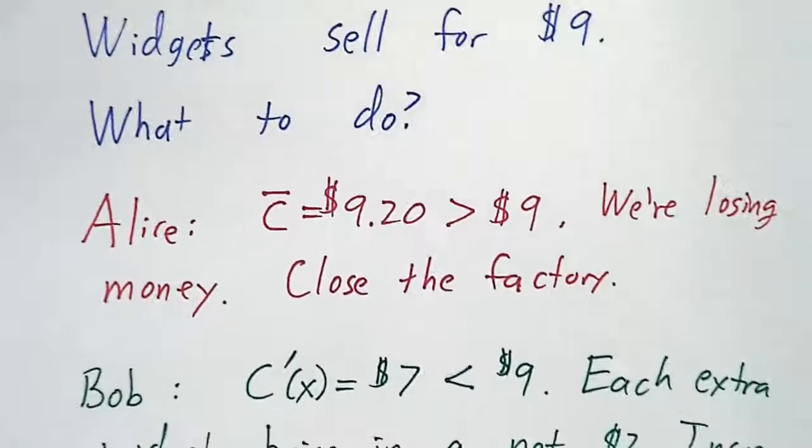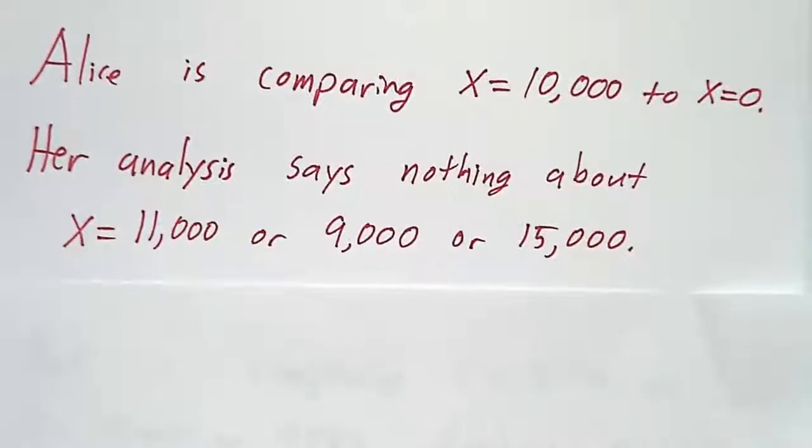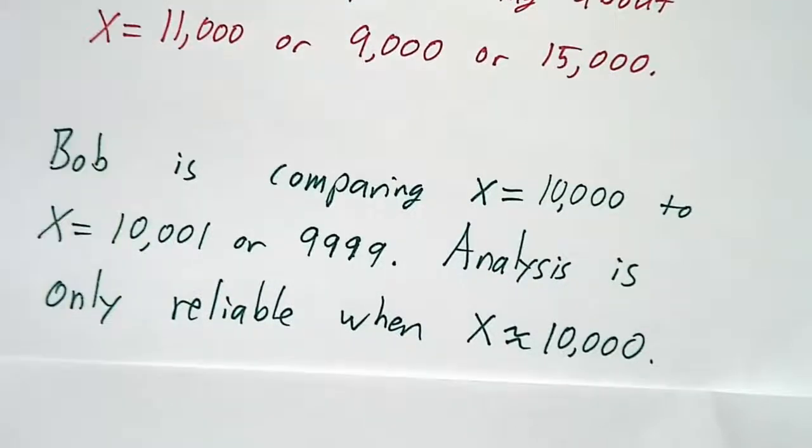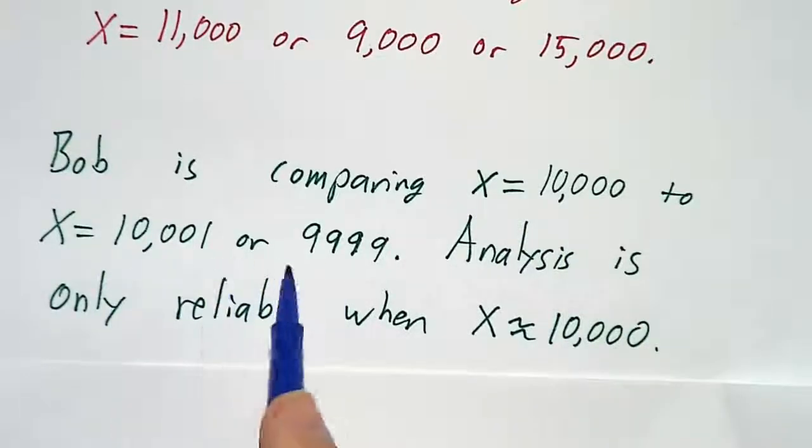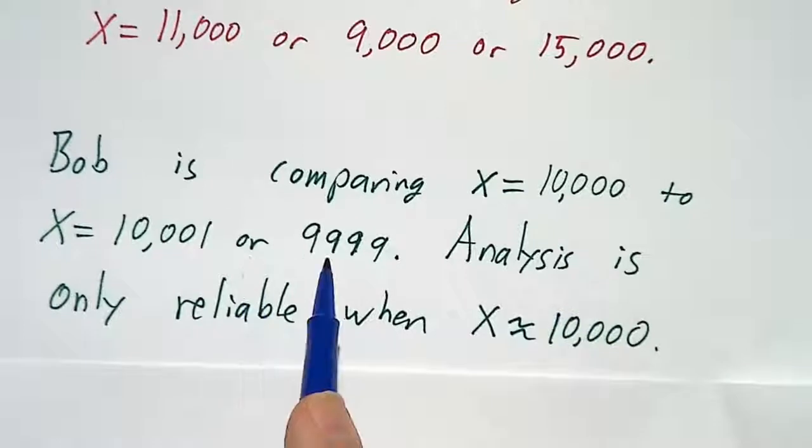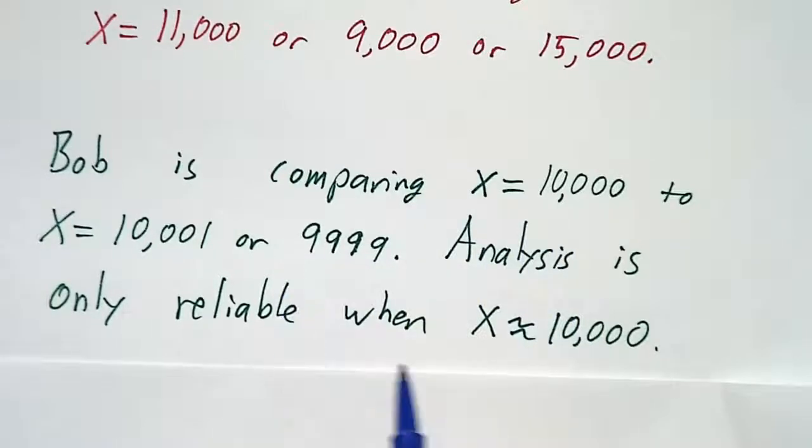Now, again, I didn't tell you which of these two were right, because in some sense, they're both right. What Alice is doing is comparing our current situation where we make 10,000 to shutting the factory down and having no production and no costs. And her analysis correctly says that 0 is better than 10,000. But it doesn't say anything about 11,000 or 9,000 or 15,000. Bob's analysis is comparing what happens at 10,000 to what happens close to 10,000, because that's what derivatives do. They give you a rate of change, and they tell you what's happening nearby. And his analysis says, you know what? 10,001 is $2 better than 10,000. And 10,000 is $2 better than 9,999. So he says we can do better than 10,000 by increasing production. And his analysis is good whenever our production value is close to 10,000.